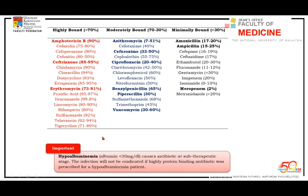Now I'll discuss antibiotic pharmacokinetics further. This is a simple audit on antibiotic prescription. The list shows high protein-bound antibiotics, moderate protein-bound, and minimum protein-bound. Hypoalbuminemia of 30 mg/dL will cause antibiotic levels of certain drugs to be subtherapeutic. So either you replace albumin for the patient, increase the high-protein diet, change the antibiotic, or increase the dosing.